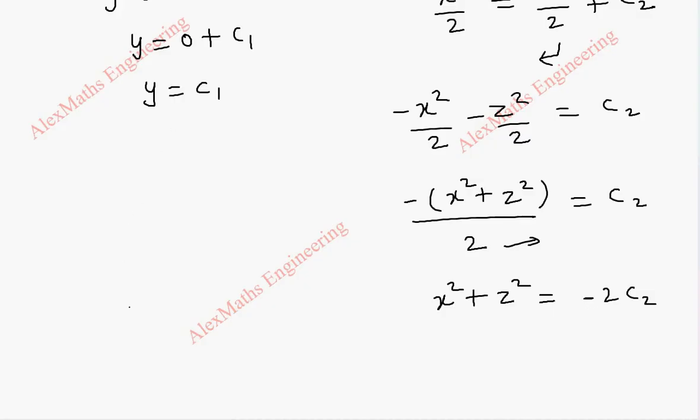And this is our u. U is c1 which is y, and this is our v, that is x square plus z square. As I told you in the previous problem, the constant can be negative or positive or some integral multiple, so we take it as v.